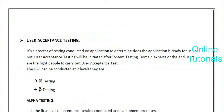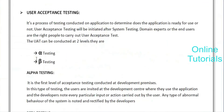User acceptance testing is the combination of alpha testing and beta testing. Alpha testing is testing the application in a company environment in front of the customer. Beta testing is testing the application in the client's place — a live environment.